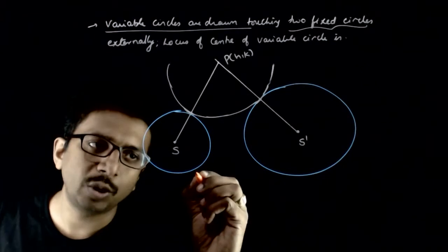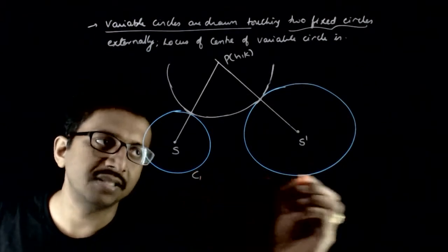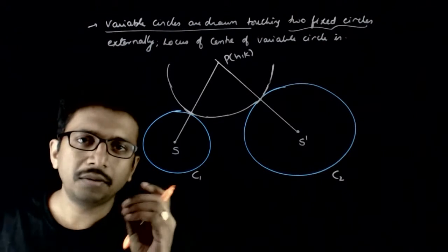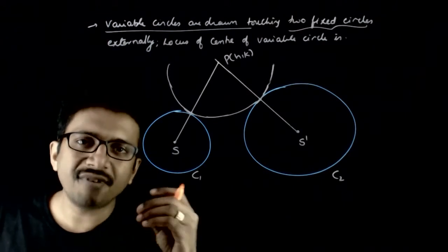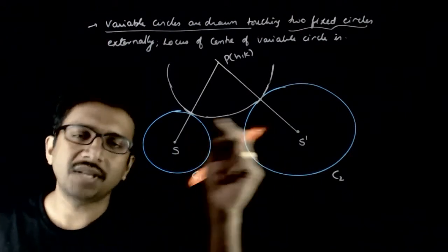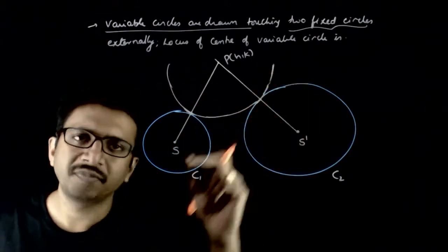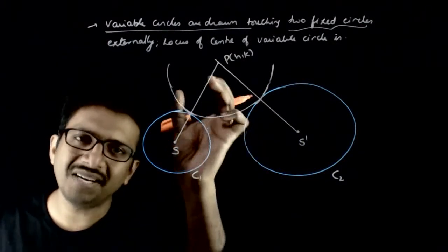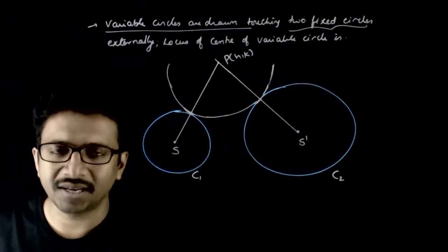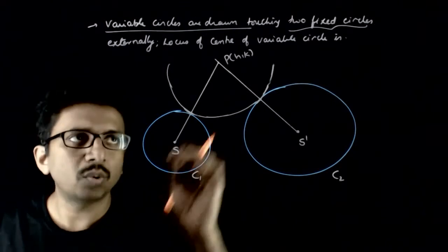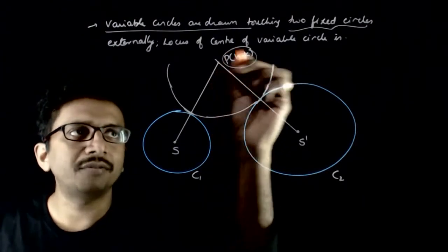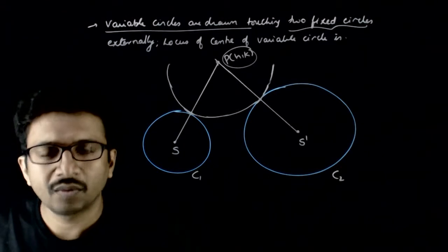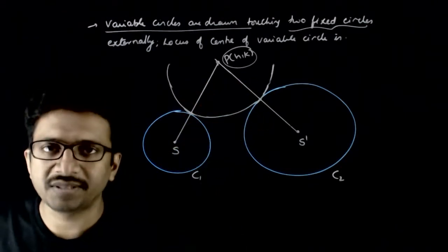Let us assume that these are the two given circles C1 and C2. These are fixed circles and you have a variable circle touching these two circles. Let this be a sample circle. You have many different circles which touch both these circles. What is the locus of the center of the variable circle? This is the question.